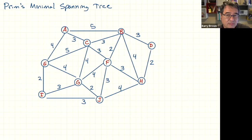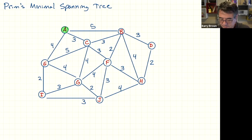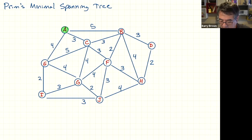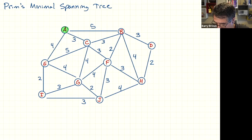We pick a vertex to start at. If you're a computer, you might pick randomly or just pick the first vertex in your list. In this case it's just A, so we start there. We're going to hit all of the vertices, so it doesn't matter where we start. Then we look at all the edges coming out of the vertices visited so far — just A — so we look at the three edges coming out of A. The weights are 4, 3, and 5, and we pick the lowest one, which is the edge going to C.